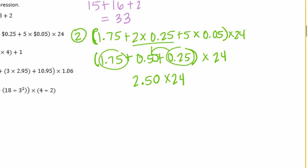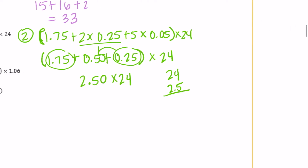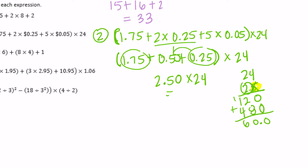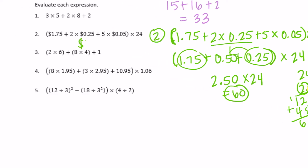So two and a half times twenty-four. Solving it like a normal multiplication problem: five times four is twenty, carry the two; five times two is ten plus two is twelve. Then two times four is eight, two times two is four. We get six hundred, but there was one digit behind the decimal point, so we move the decimal point one place left and get sixty — so this equals sixty dollars.